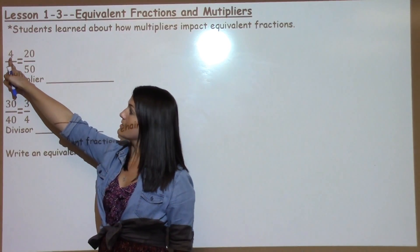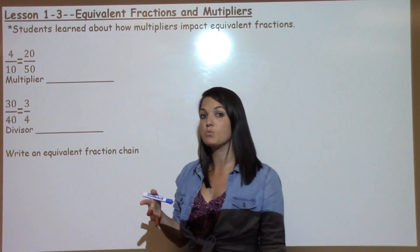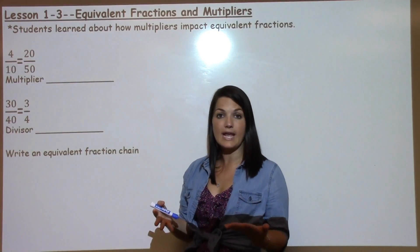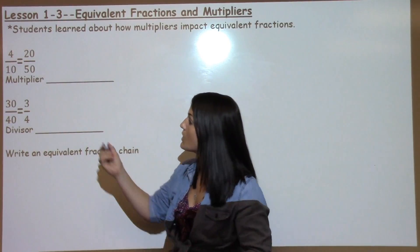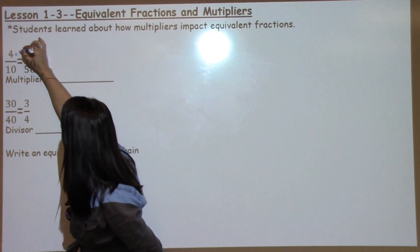One strategy that we teach students is to think, 4 times what gives me 20? So they could count by 4's: 4, 8, 12, 16, 20. 4 times 5 gives us 20.